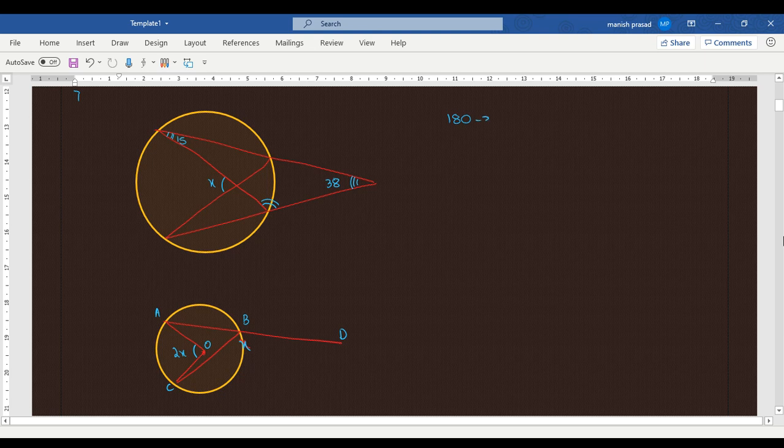127. Okay, now if this is 127, what will this one be? 53. If this is 53 on the circle, what would be at the center?